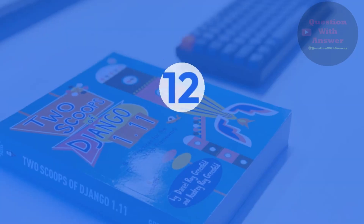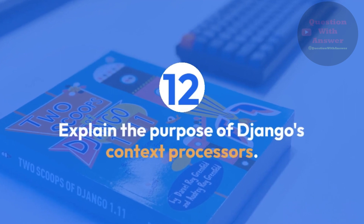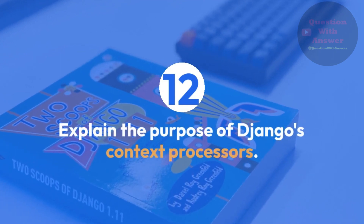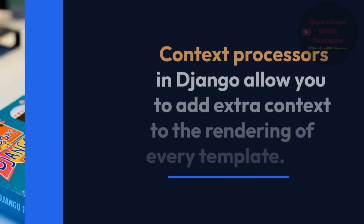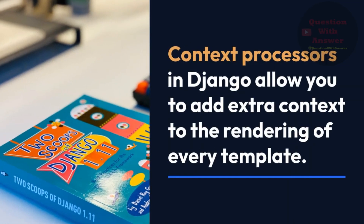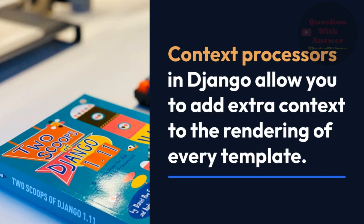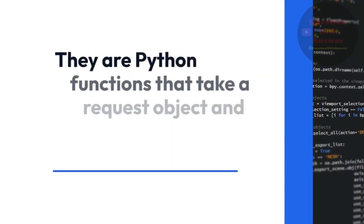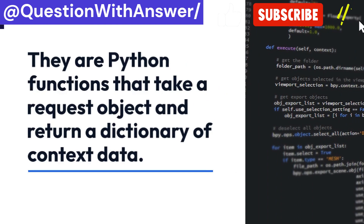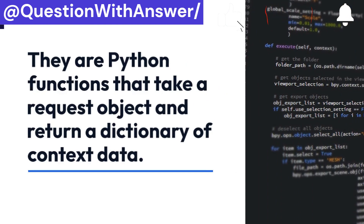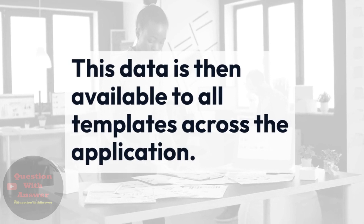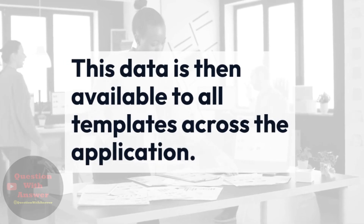Question 12: Explain the purpose of Django's context processors. Answer: Context processors in Django allow you to add extra context to the rendering of every template. They are Python functions that take a request object and return a dictionary of context data. This data is then available to all templates across the application.